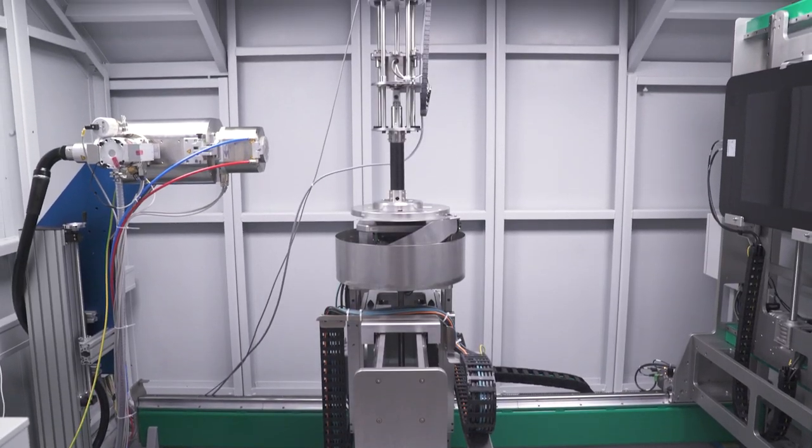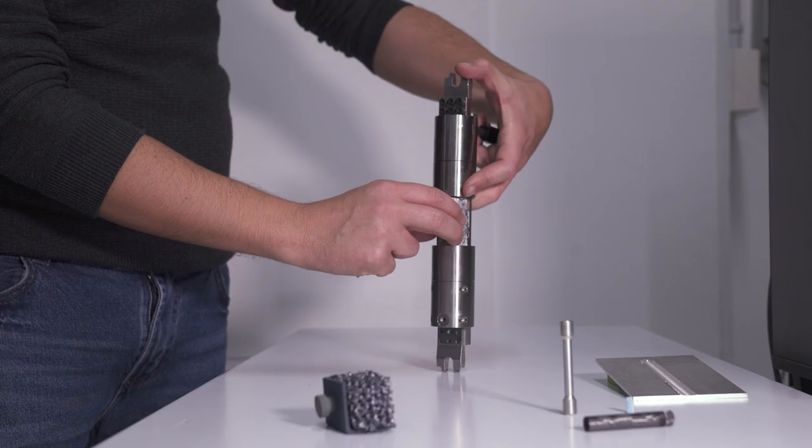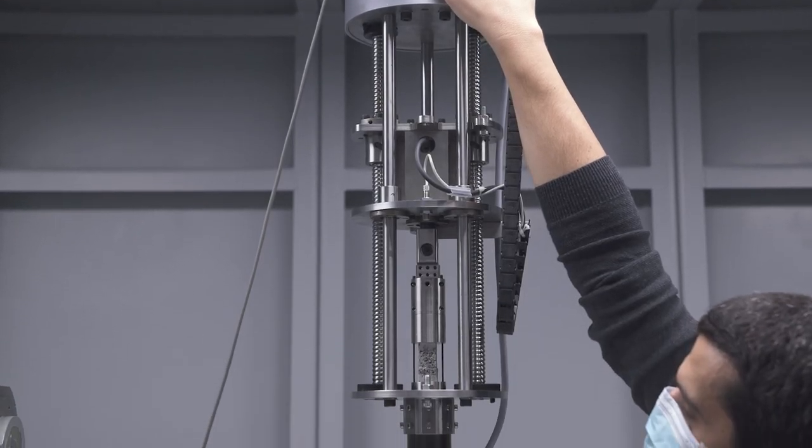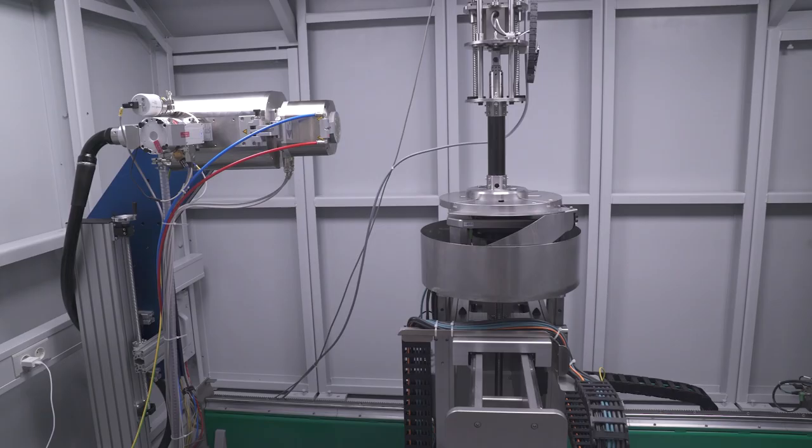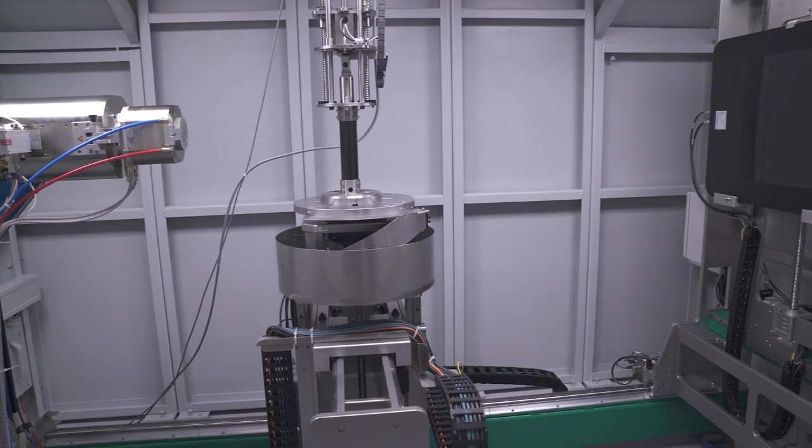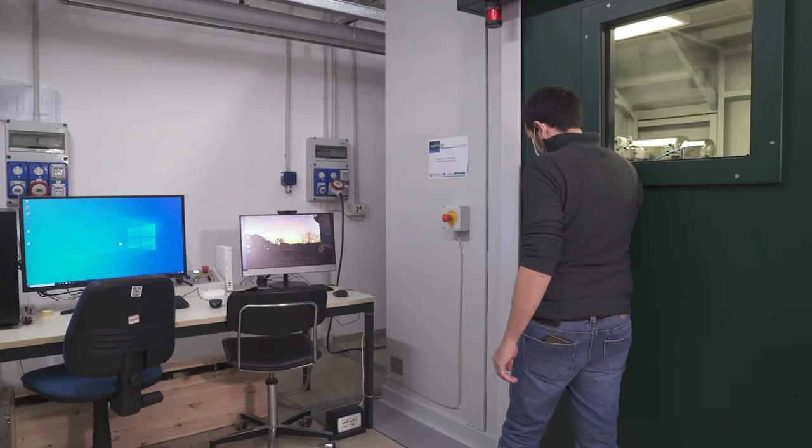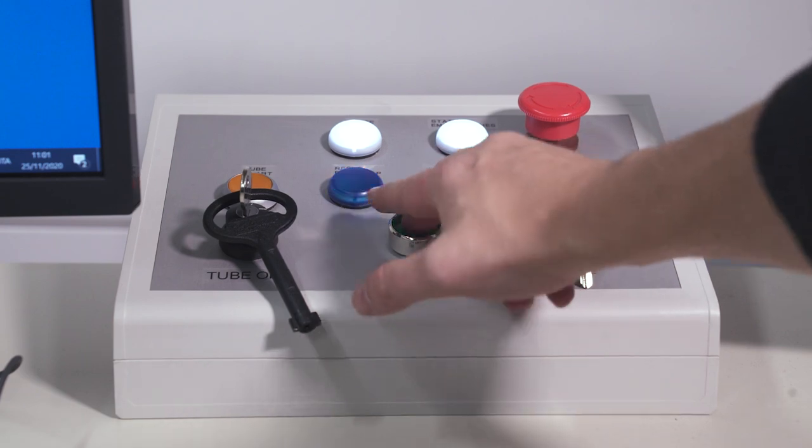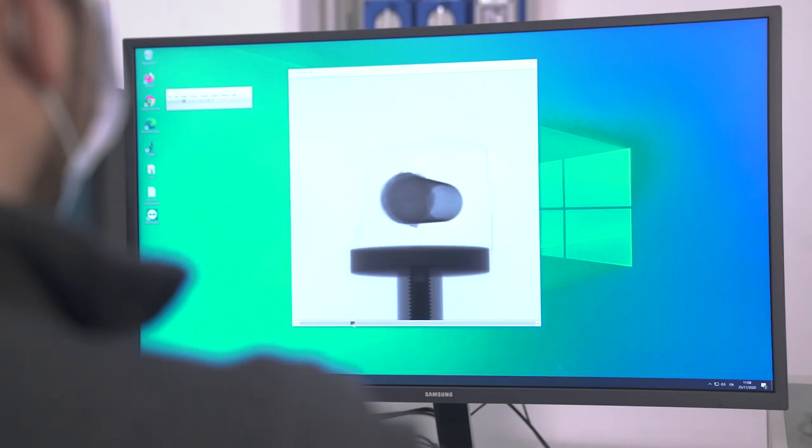Custom-built computer tomography with in-situ mechanical testing: tensile, compression, bending with a loading cell of 10 kN. With a chamber size of 3.5 m x 2.5 x 2.5, able to scan samples up to 0.5 m x 0.5 x 0.5 with resolution of about 5 microns.